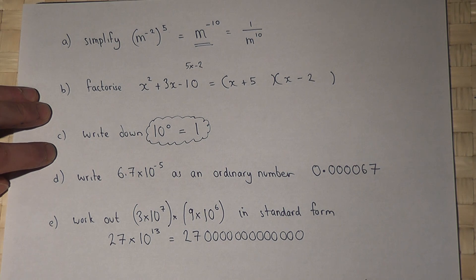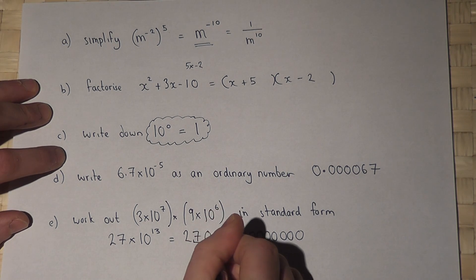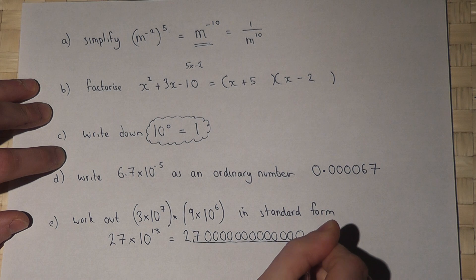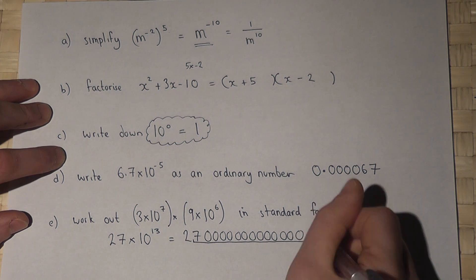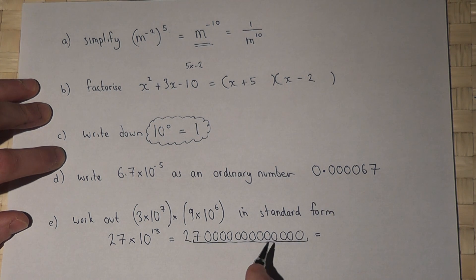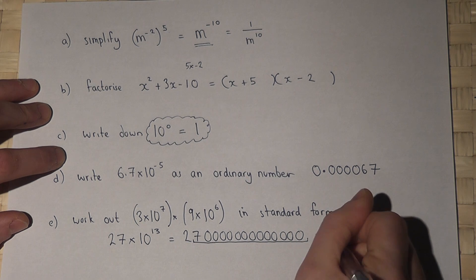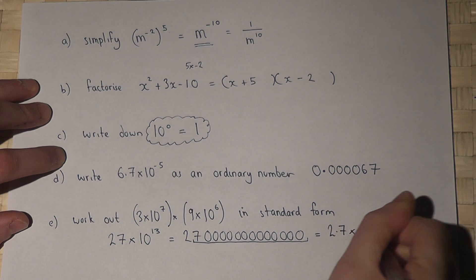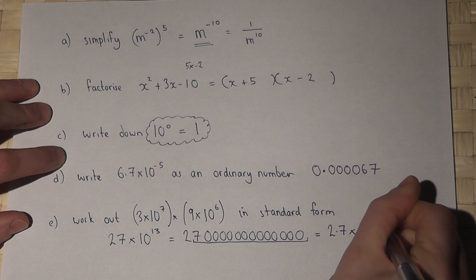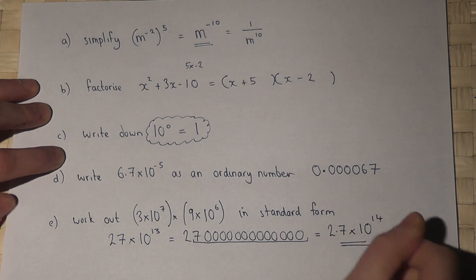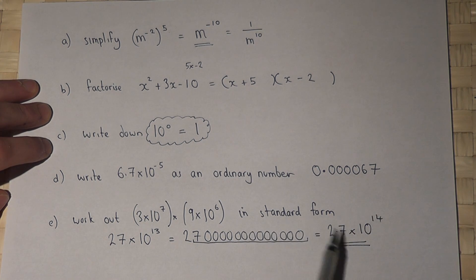This means that there are fourteen numbers after the first digit, so in standard form it will be 2.7 times ten to the power of fourteen. So the answer in standard form is 2.7 times 10 to the power of 14.